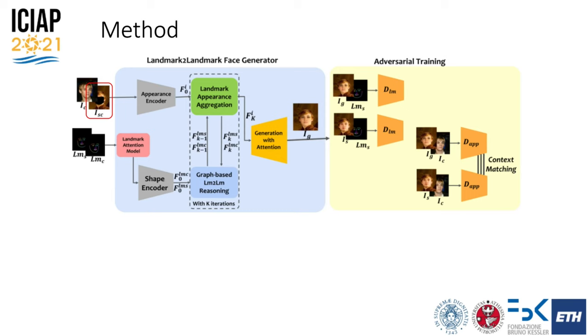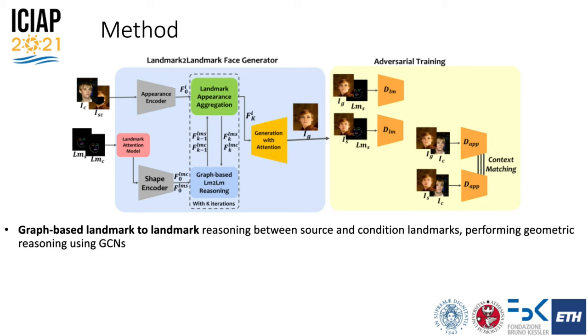We have two branches: one that takes as input the masked source image and the condition face, and encodes them throughout the appearance encoder. The second branch takes as input the landmarks of the two faces and builds a bipartite graph between them.